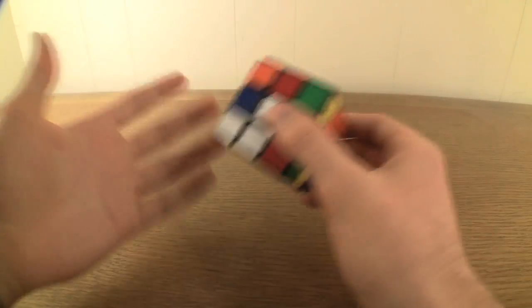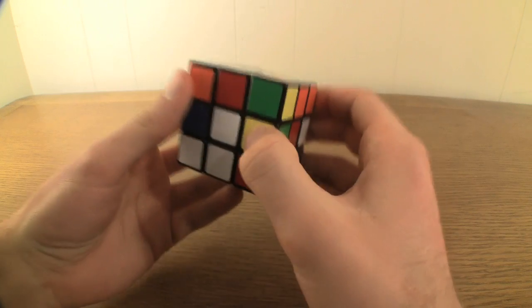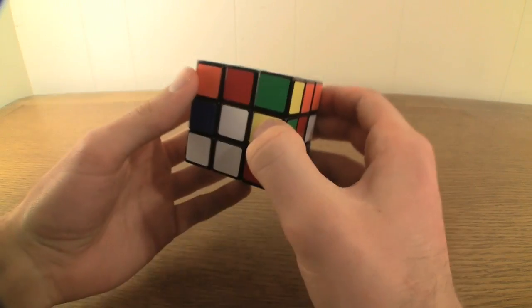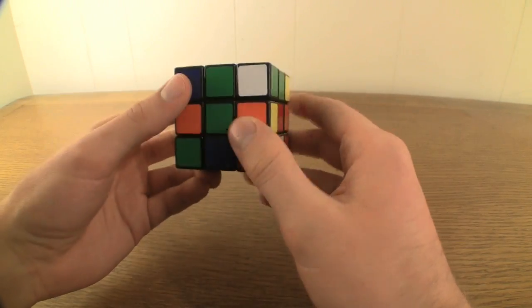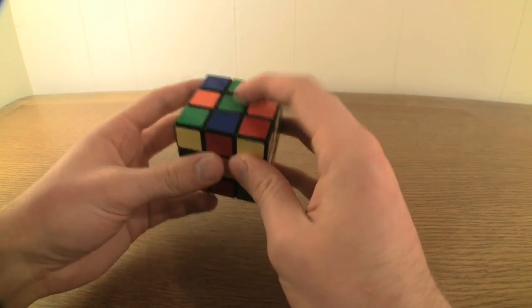Right now, however, for the sake of simplicity, I think it would be best if we just always started with the green side. Find the side with the green center and make it your upside, like this.